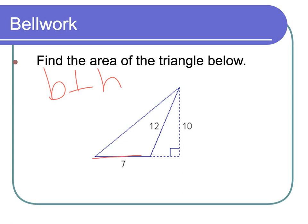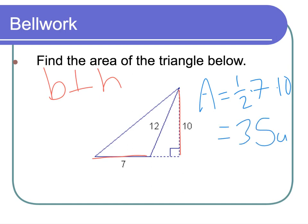So my base of this triangle is the 7, and the height is actually the 10. If you remember, can an altitude be drawn outside the triangle? Yes, it can. A median cannot, but an altitude can. Area equals one-half base times height, and we get our area, which is going to be 35 units squared.